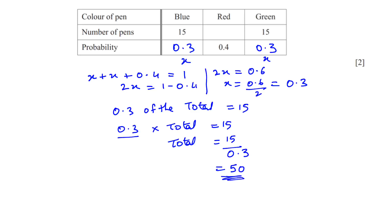So the total number of pens are 50. And 50 minus the blue and the green, which is 15 plus 15, will give us 20. The red pens are 20.